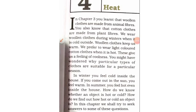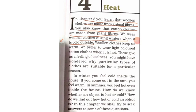In Chapter 3 you learned that woolen clothes are made from animal fiber, and cotton clothes are made from plant fiber. We wear woolen clothes during winter when it is cold outside. Woolen clothes keep us warm. We prefer to wear light-colored cotton clothes when it is hot.